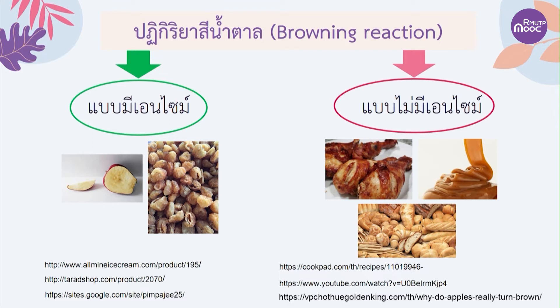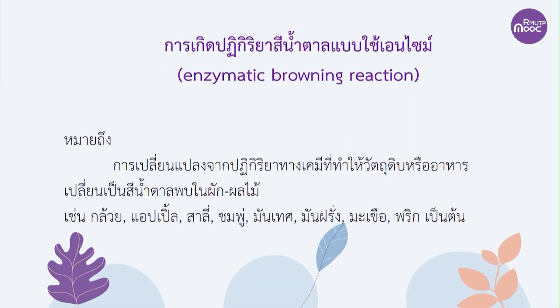อีกแบบหนึ่งก็คือการเกิดปฏิกิริยาสีน้ำตาลแบบไม่มี Enzyme มาเกี่ยวข้อง เรียกว่าเป็น Non-Enzymatic Browning Reaction ตัวนี้จะพบในอาหารอย่างเช่นไก่ปิ้ง ไก่ย่าง หรือว่า Caramel ขนมอบ อย่างขนมปังที่มีสีเข้มขึ้นเป็นสีน้ำตาล สีอะไรอย่างนี้ก็เกิดจากปฏิกิริยาสีน้ำตาลแทบทั้งนั้นเลย